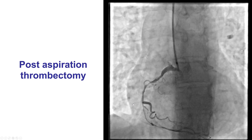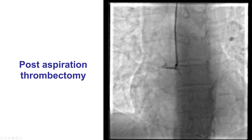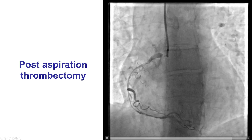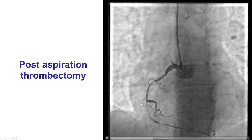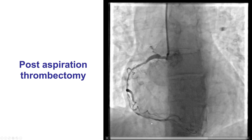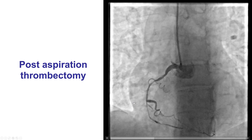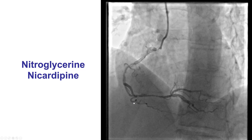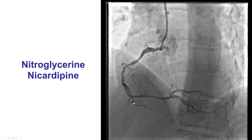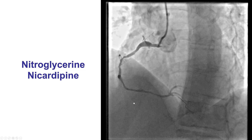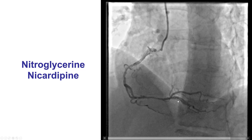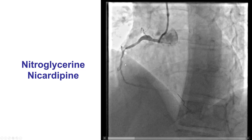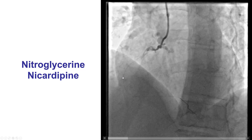This is how the vessel looked after aspiration thrombectomy. There was restoration of antegrade flow. However, there remained large areas of disease which could represent spasm and/or residual thrombus. The next step was to administer vasodilators: nitroglycerin and nicardipine. This helped increase the size of the vessel and improve flow. We now have good TIMI-3 antegrade flow and do not see any obvious intraluminal filling residual defects.